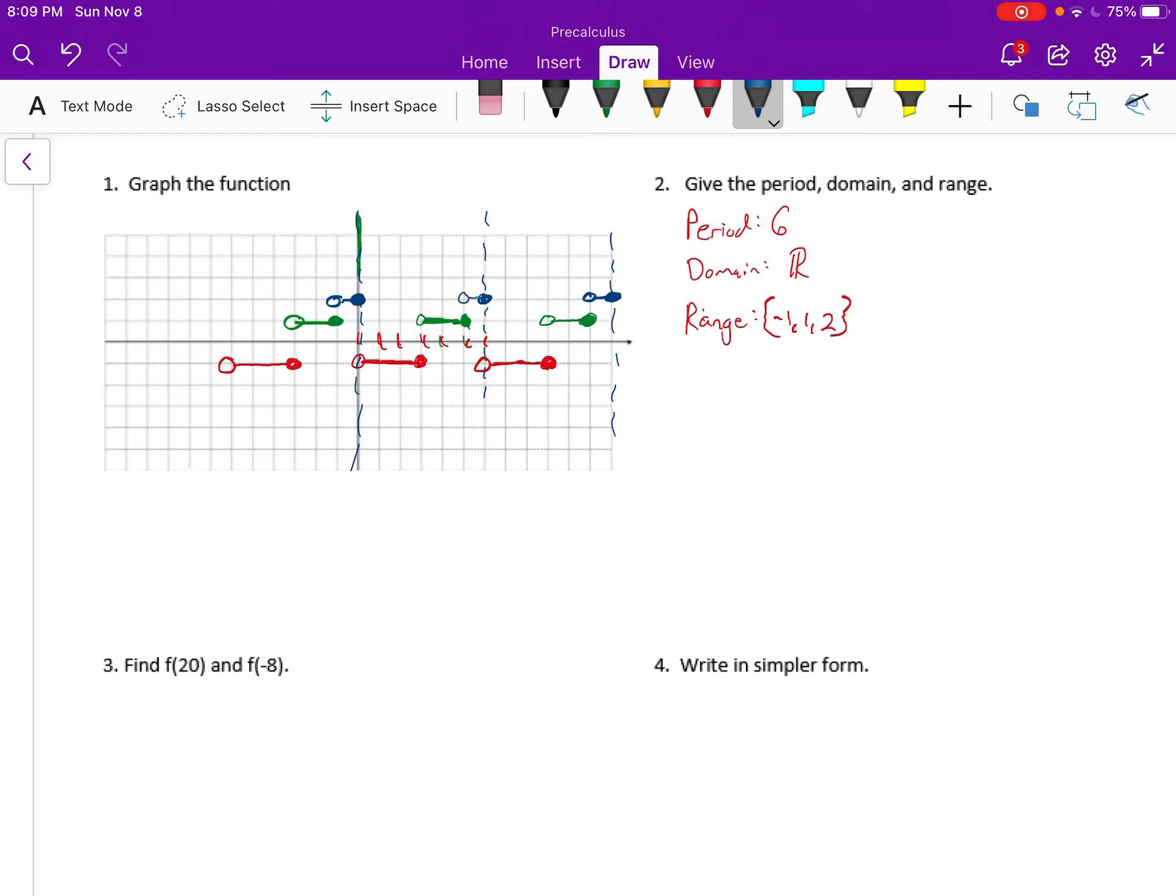Now it says find f(20) and f(negative 8). The way that we graphed, finding f(negative 8) isn't going to be too bad because I think that's on our graph. So counting to negative eight, actually it's not, so we could pretty easily keep going. This is one unit, and then this one is two units. And so at negative eight, we're at one.